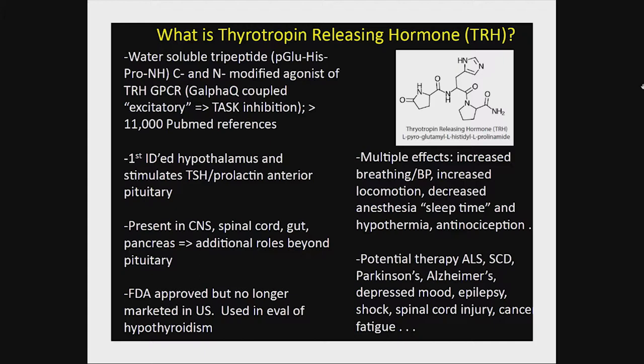As a therapeutic agent, TRH had a lot of promise because of its neurostimulatory and neurotropic effects. When injected into an animal, it increases breathing, blood pressure, and locomotion. It decreases anesthesia sleep time by about 50%, which is how I got interested in it. It also diminishes hypothermia and may have analgesic or anti-nociceptive properties. It has been examined as a potential therapy for ALS, spinal cerebellar degeneration, Parkinson's, Alzheimer's, rapid treatment of depression, epilepsy, spinal cord shock and injury, and cancer fatigue.